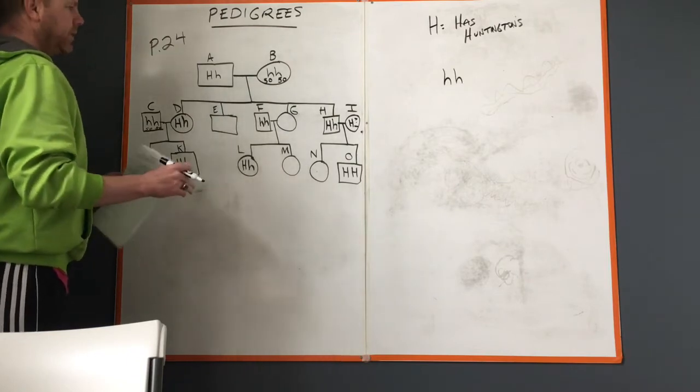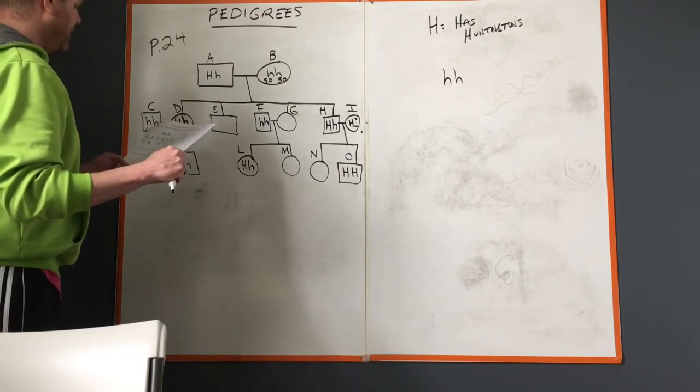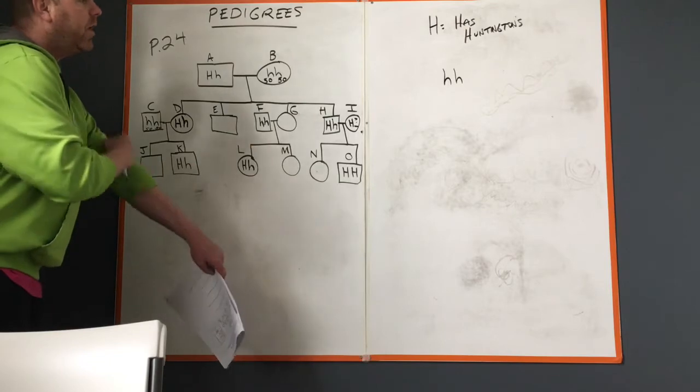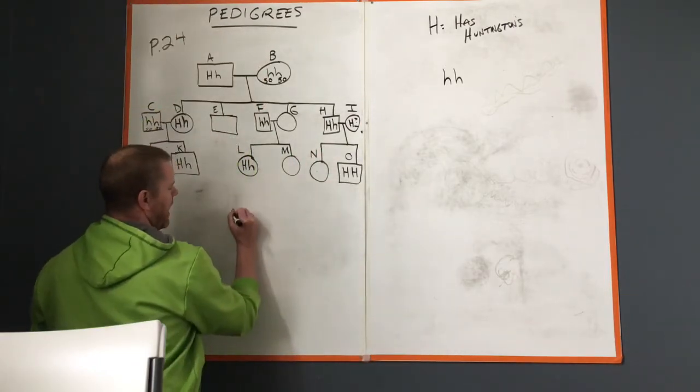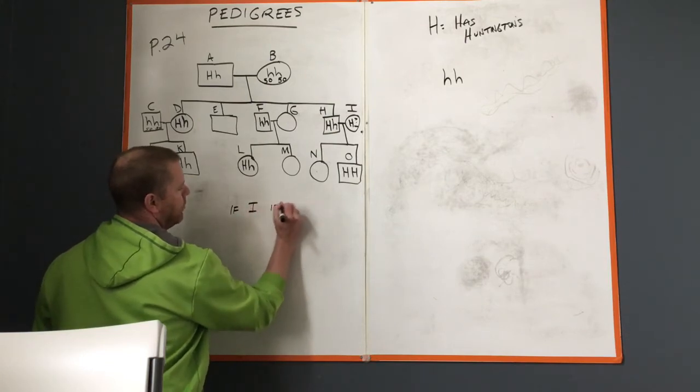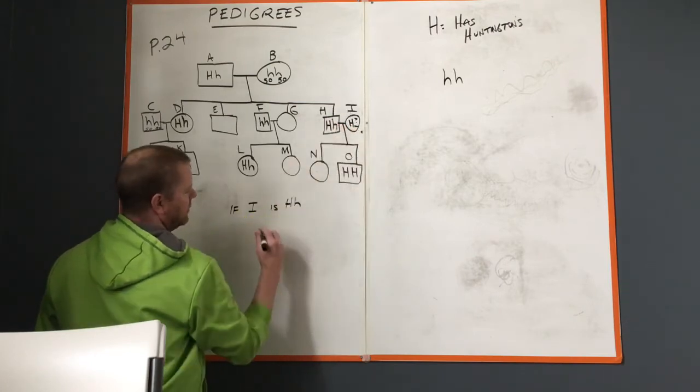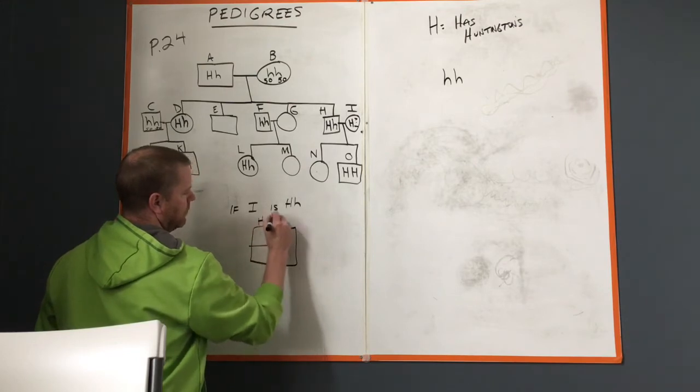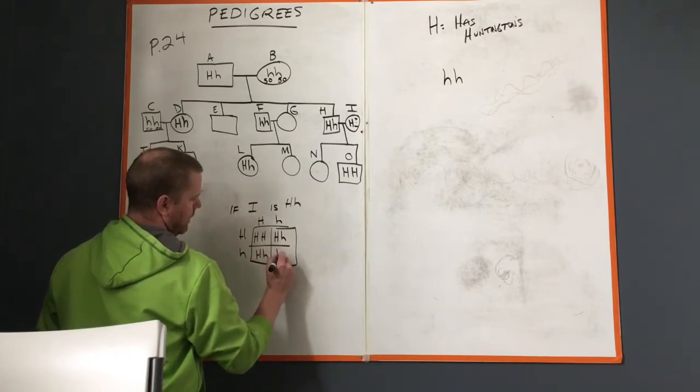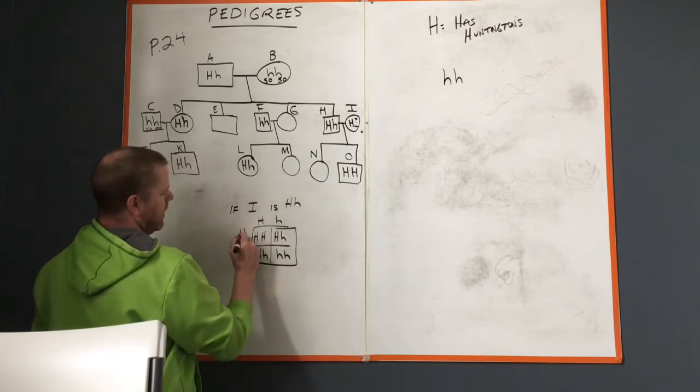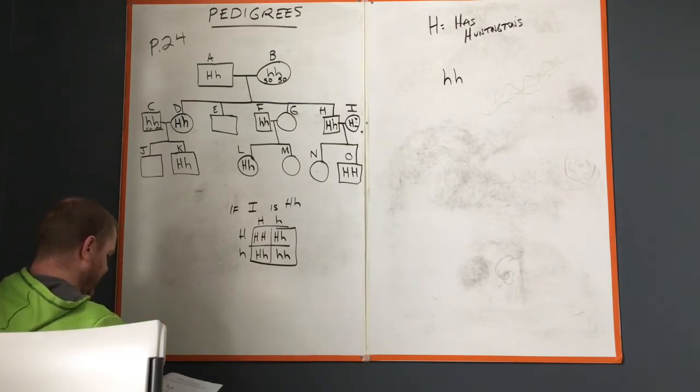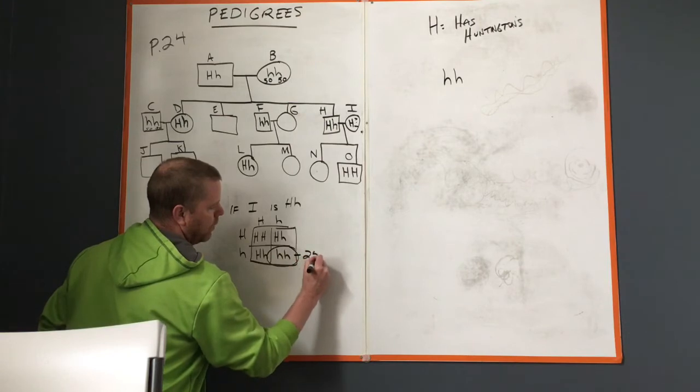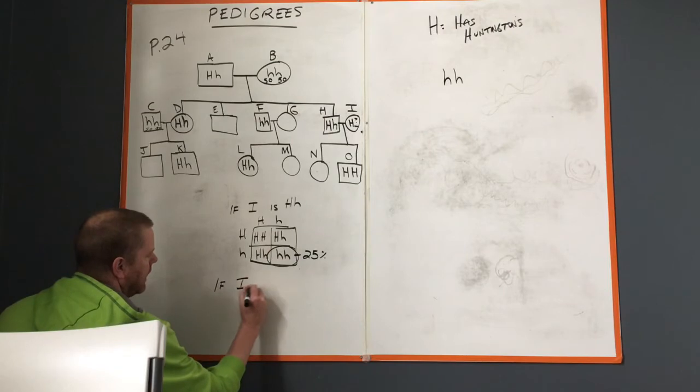What is the probability that N will not have Huntington's disease? It really just depends on what this organism is. If person I is big H little h, then you'd have big H little h times big H little h. That gives you big H big H, big H little h, big H little h, and little h little h. You'd have one, two, three with Huntington's and one without. What is the probability will not have Huntington's? This one will not have it, so 25 percent of the time.